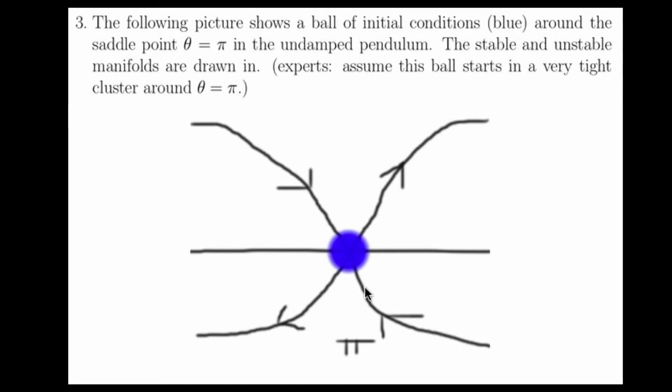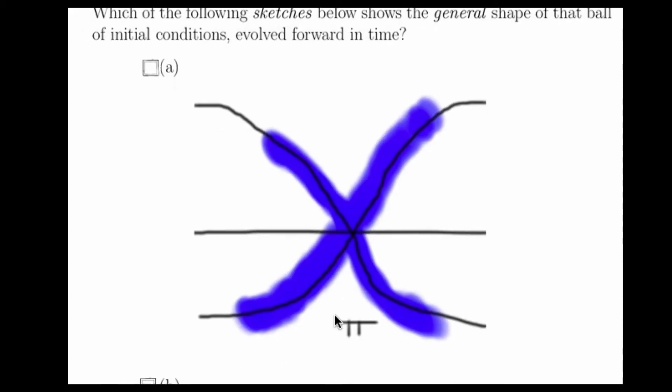If we just think about this intuitively, we know that along the stable manifolds we'll have shrinking, so these points will shrink in, and along the unstable manifolds we'll have stretching. So what we should see is a long line of points along the unstable manifolds. For this reason, A cannot be correct because you have points spreading along the stable manifold. This would only occur in backwards time.